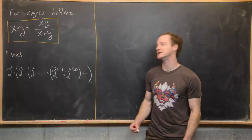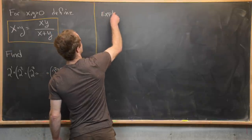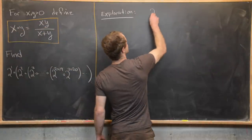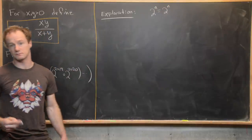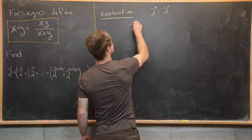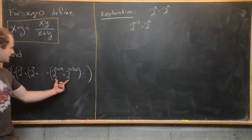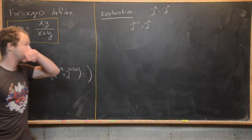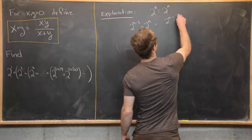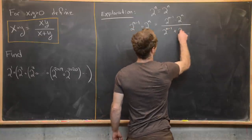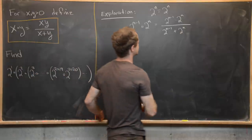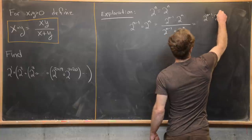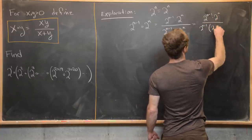Let's get to our first solution using induction. I want to start with some exploration to build up a guess for our inductive formula. First, notice that 2 to the n is just 2 to the n. Then let's compute 2 to the n minus 1 circle 2 to the n — that's like the innermost operation with n equals 2020. This is going to be 2 to the n minus 1 times 2 to the n over 2 to the n minus 1 plus 2 to the n. We can factor out 2 to the n minus 1 from the denominator, leaving 2 to the n minus 1 times 2 to the n over 2 to the n minus 1 times the quantity 2 plus 1.